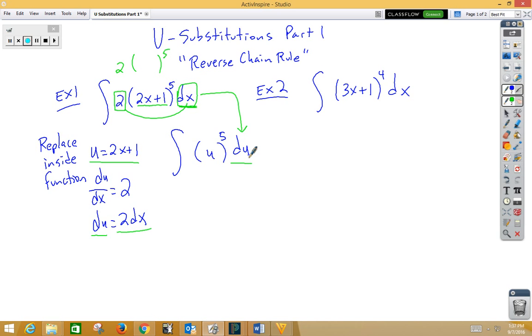Now we can go ahead and do the reverse power rule. u to the five plus one divided by five plus one plus c. So that gives us u to the sixth over six plus c. But notice it's not really u, it's really 2x plus 1. So our final answer is 2x plus 1 to the sixth power over six plus c.